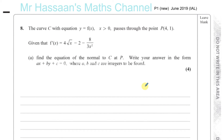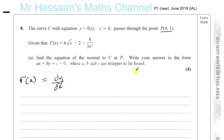Question number eight from P1 June 2019 International A-level. The curve with equation y = f(x), where x > 0, passes through the point P(4, 1), given that f'(x) = 4√x − 2 − 8/(3x²). First, find the equation of the normal to C at P. Note that f'(x) means the same as dy/dx — if the equation is in terms of f(x), you write f'(x) as the differential.